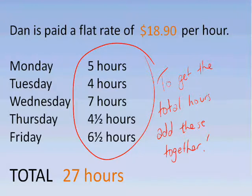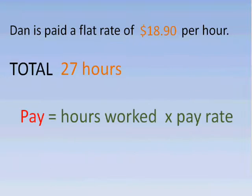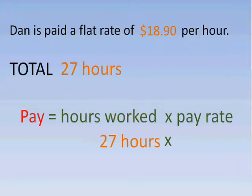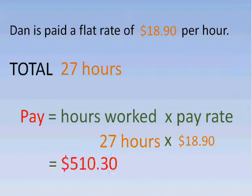Now we have to work out how much Dan's going to get for that week's work. What we do is multiply the hours worked by the pay rate. The hours worked is 27 hours, by the pay rate of $18.90 an hour. So Dan for the week will get $510.30. That's how you work with flat rates of pay — just multiply the hours worked by the pay rate.